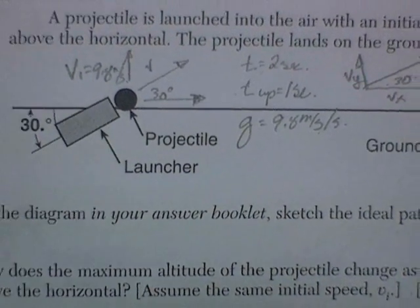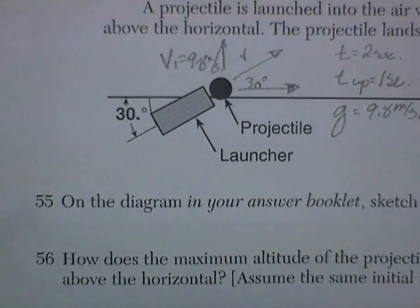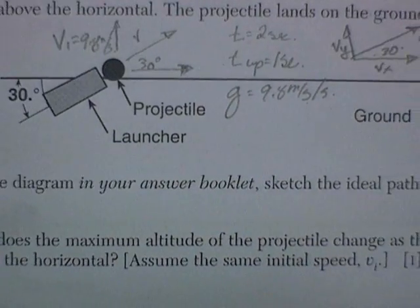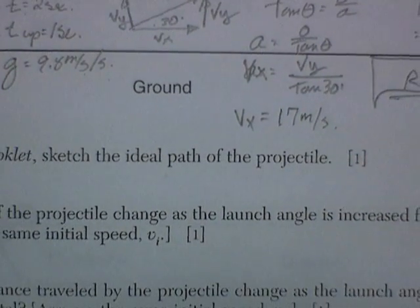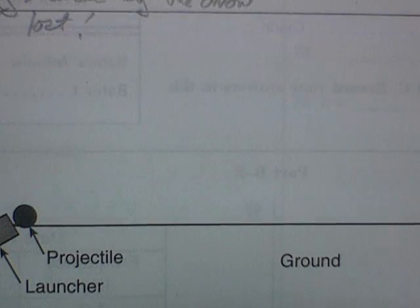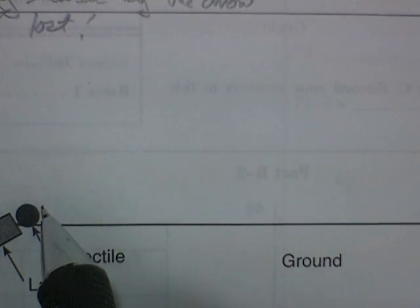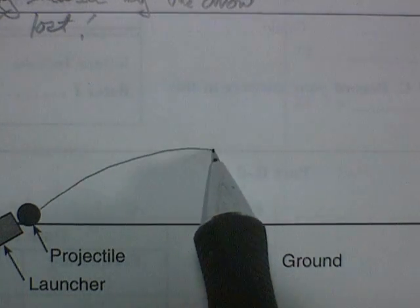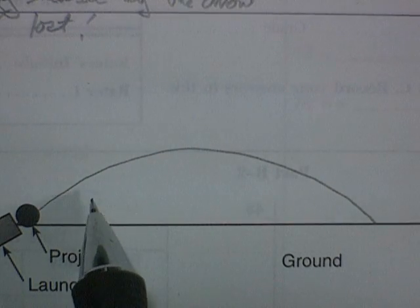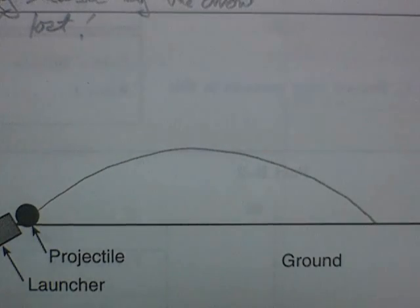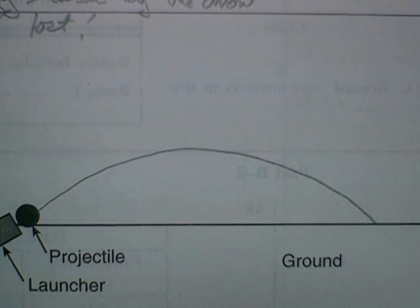Let's go see what they want to know. On the diagram in your answer booklet, sketch the ideal path for the projectile. Well, that's pretty easy. It's without air friction, so it's going to travel in a parabolic arc. It's going to go up for a while and come down for a while. So the first question is pretty easy.